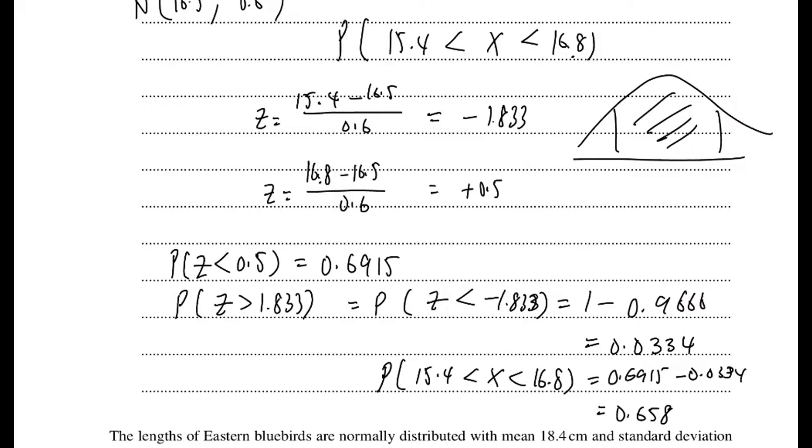So it's my answer 0.658. So it's basically just trying to find a probability, trying to find the area. You can use calculator, but you can also use the table.